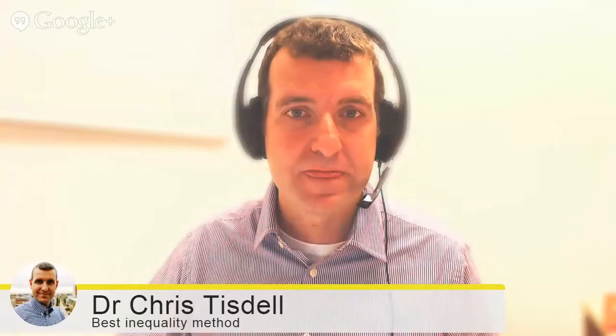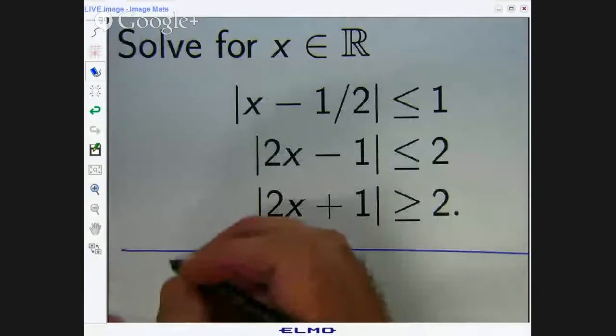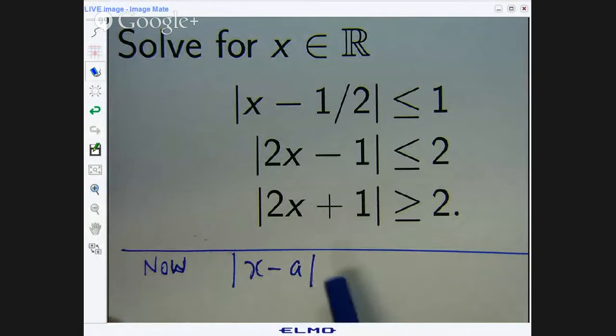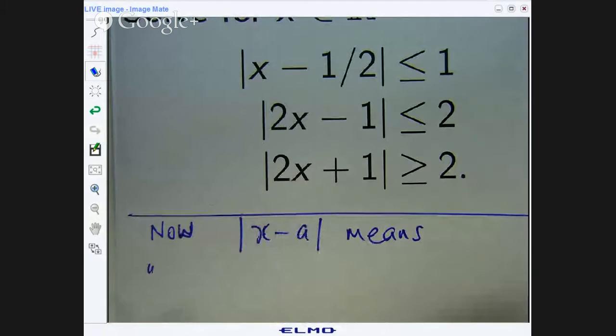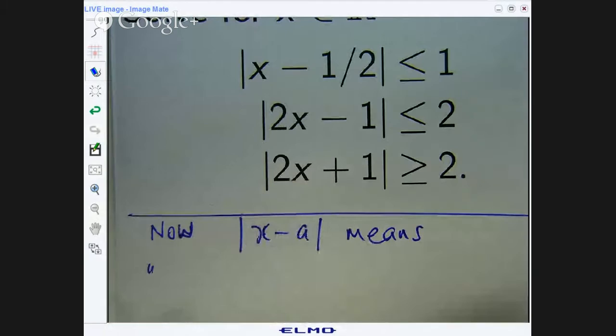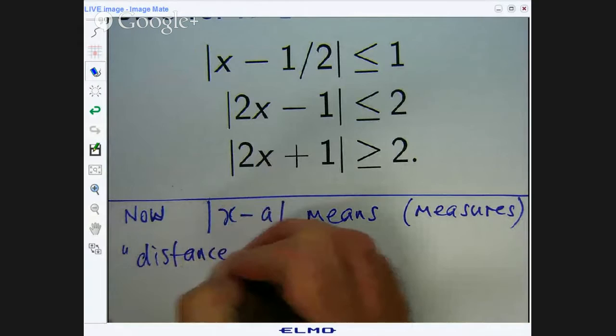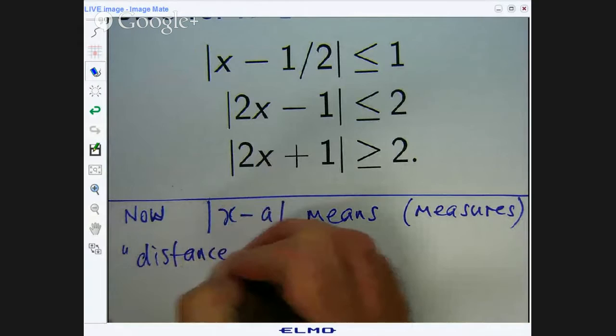Before we get down to business though, what does this actually mean? We've got the absolute value of x minus some number. So think of a as a number. The absolute x minus a and you've got some inequality there. What does it mean? Well, it means the distance from whatever x is to the point a. So it means or measures the distance from x to a.